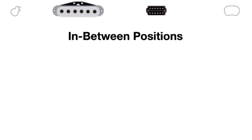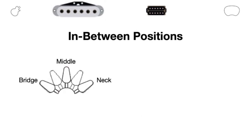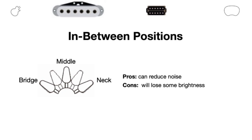Next we're going to dive into our in-between positions. On a traditional S-style guitar you'll often have three single coil pickups and a five-way selector switch. Positions one, three, and five give us our straight-up bridge, middle, and neck pickup. Positions two and four give us combinations of bridge-and-middle or middle-and-neck. These give us some different sounds — they reduce the noise and hum inherent to single coil pickups, but you do lose some brightness. It's not necessarily a con, just more options for tonal variation. In these in-between positions it's definitely a darker, almost hollow sound when compared to the straight-up single coil.